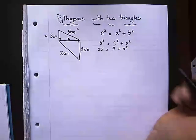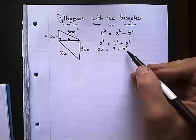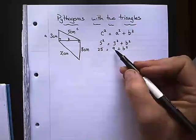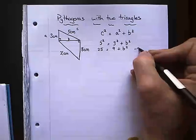Now what I need to do is rearrange this. I need to get B squared on its own and then square root the answer. So to get rid of this 9, this is a plus 9, I need to minus 9 from both sides.